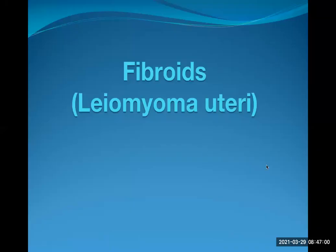Good morning. Today I'm going to talk about two important topics in gynecology, both belonging to disorders of the uterus. One is a benign tumor called fibroid uterus, also known as leiomyoma uteri — a benign tumor of smooth muscle. On the other hand, after finishing this topic, I'll deal with the malignant tumor arising from the uterus, that is endometrial carcinoma.